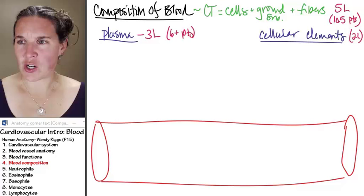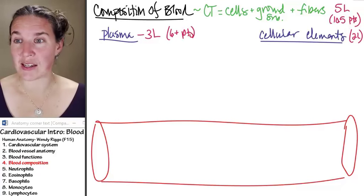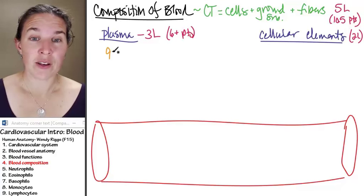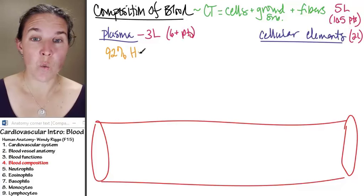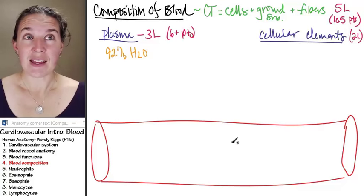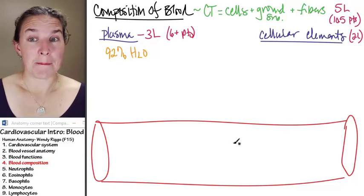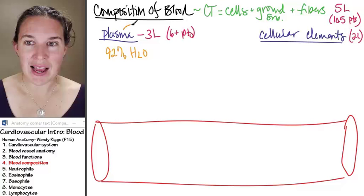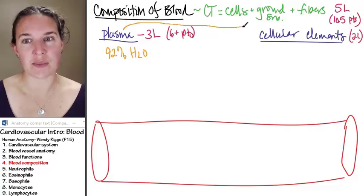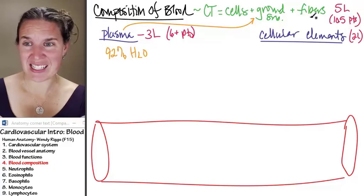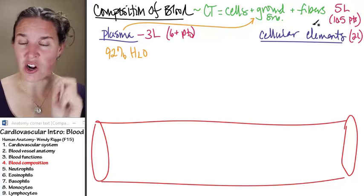Let's talk about our plasma first. 92% of your plasma is water. 92% water. And that's how we ended up with it being fluid. The plasma is actually your ground substance. Your plasma has stuff in it, which are considered our fibers.